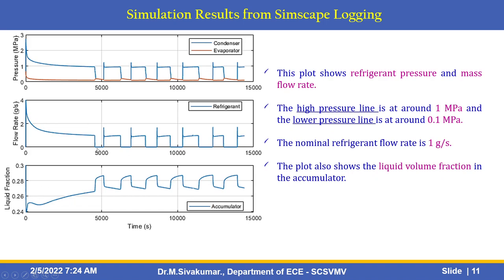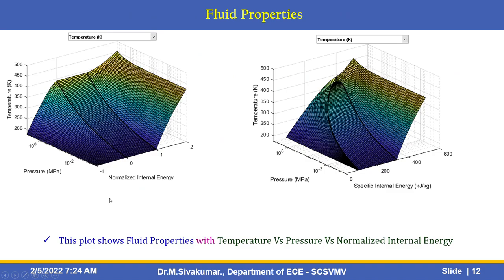This plot shows refrigerant pressure and mass flow rate. The high pressure line is around 1 MPa and the low pressure line is around 0.1 MPa. The nominal refrigerant flow rate is 1 gram per second. This plot also shows the liquid volume fraction in the accumulator.